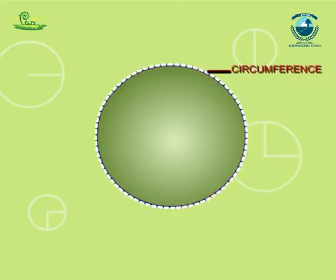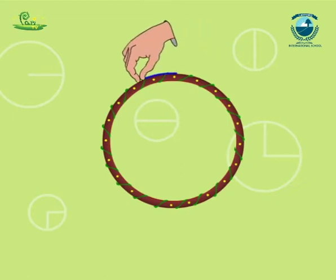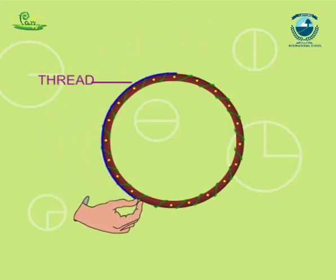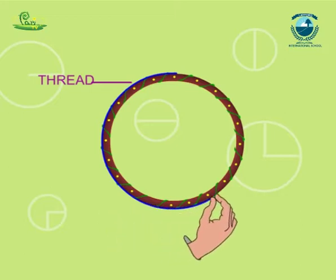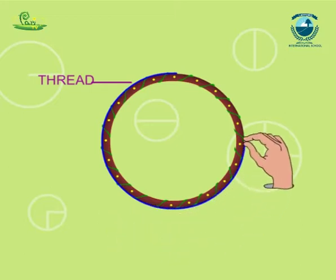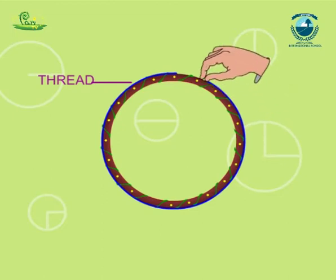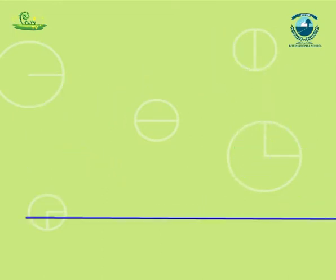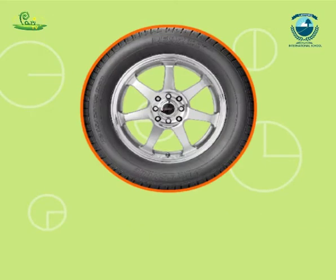The distance around the circle is called the circumference. The length of the thread that winds around the circle exactly once gives out the circumference of the circle. It will be very difficult to find the distance around the track or any other circular object by measuring through string.